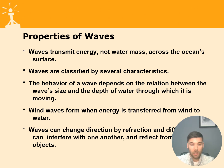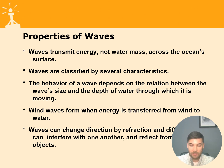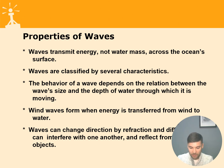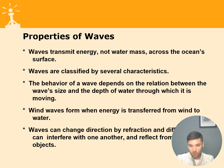Wind waves form when energy is transferred from wind to water — wind is the main source for most waves. Just a few waves are generated by tsunamis, ships, or other sources. Waves can also change direction by refraction and diffraction. When a wave approaches a narrow channel, it will spread after passing through, and if there is an obstacle, it will reflect and move in a different direction.